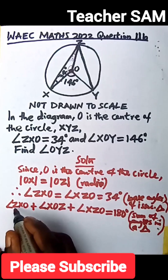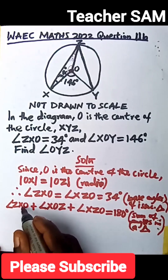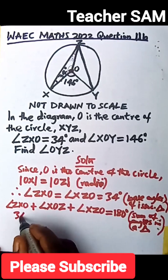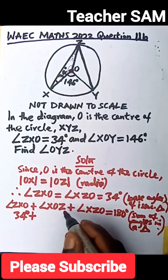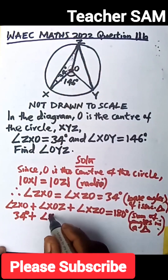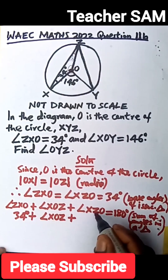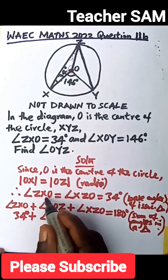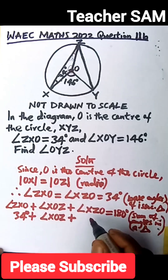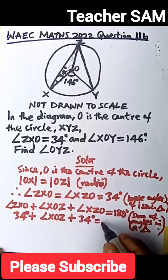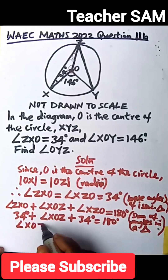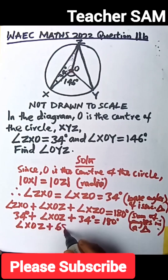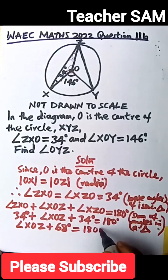Substituting their values: angle ZXO is 34 degrees, plus angle XOZ, plus angle XZO which is also 34 degrees, equals 180 degrees. Adding 34 plus 34 gives 68. So angle XOZ plus 68 degrees equals 180 degrees.